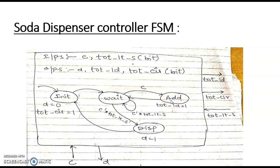In the add state, it will add the coin value with TOT. After addition, the value is loaded into the TOT register. If TOT_LTS equals 1 — when, after addition, it is coming into the state — it will make TOT_LTS equal to 1.